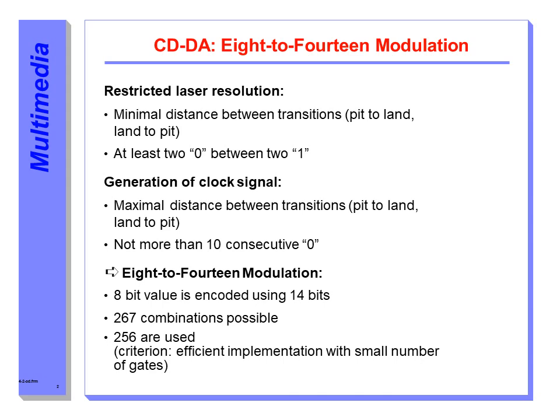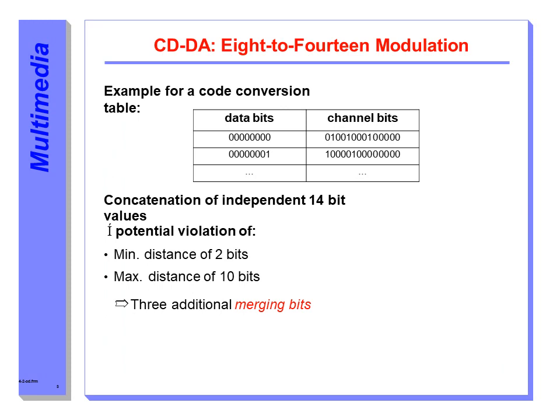Before writing, 8-to-14 modulation is applied. This transformation ensures that the requirements regarding minimum and maximum lengths are met. 8-bit words are coded as 14-bit values. Given the minimum and maximum allowed distances, there are 267 valid values, of which 256 are used. We can see a coded table example showing the conversion from 8 data bits to 14 channel bits. It is still possible that the minimum distance of 2 bits would not be met or the maximum distance of 10 bits would be exceeded.